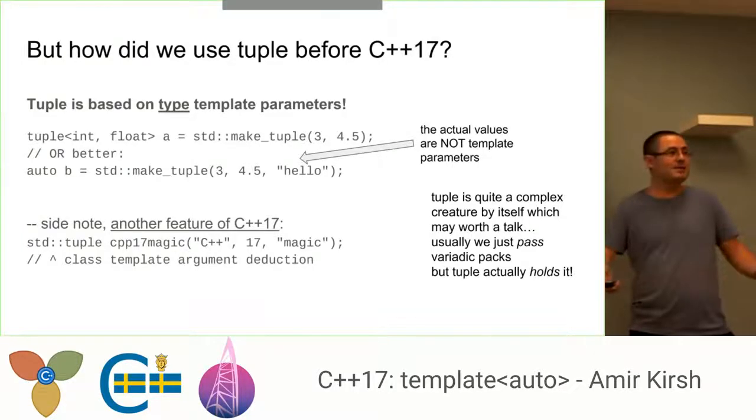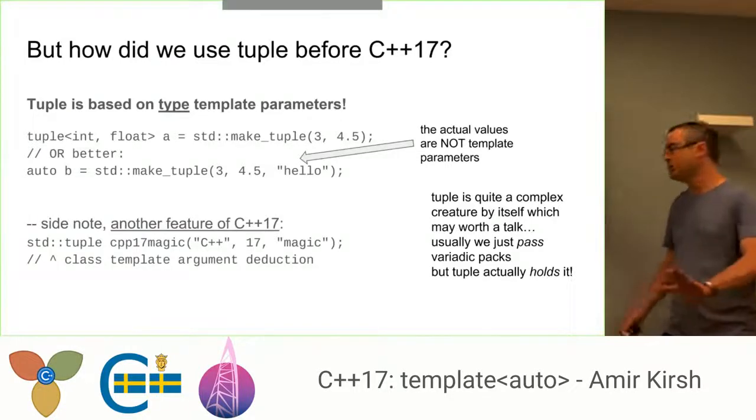Tuple is also interesting because how it holds its values, it's like a mystery. Because usually what we do when we get template pack parameters, we just pass them, which is the easiest thing to do. You get that and you say, well, I know there is a constructor who wants to take that from, let's say, in place. So we just pass that on. But tuple does not have this privilege. Tuple needs to hold it. So we'll not talk about that right now, but this is interesting. So tuple is not the case. It doesn't need the template auto, but there are other cases.